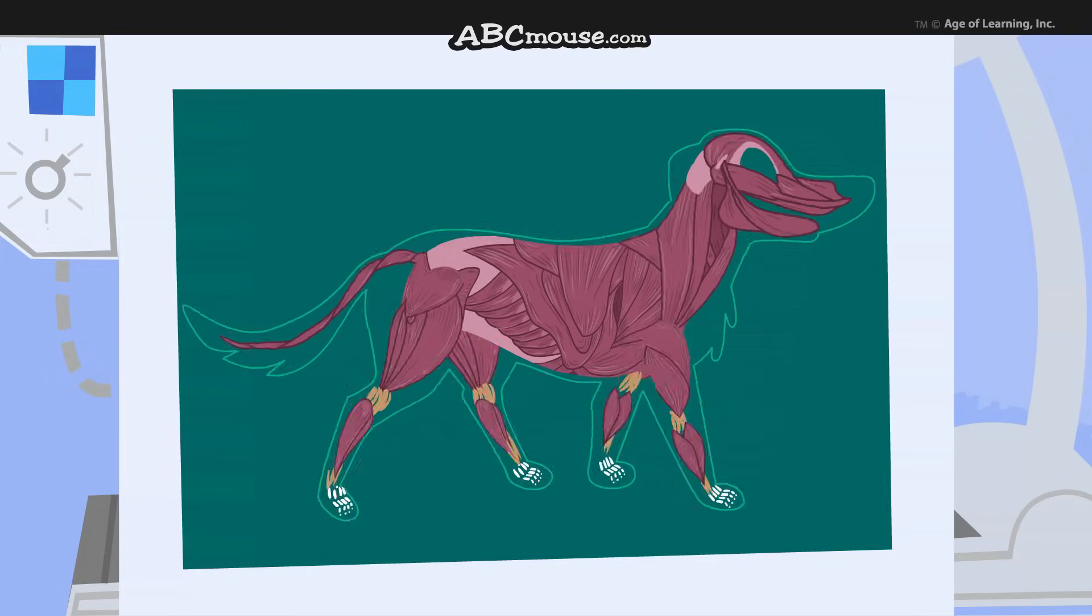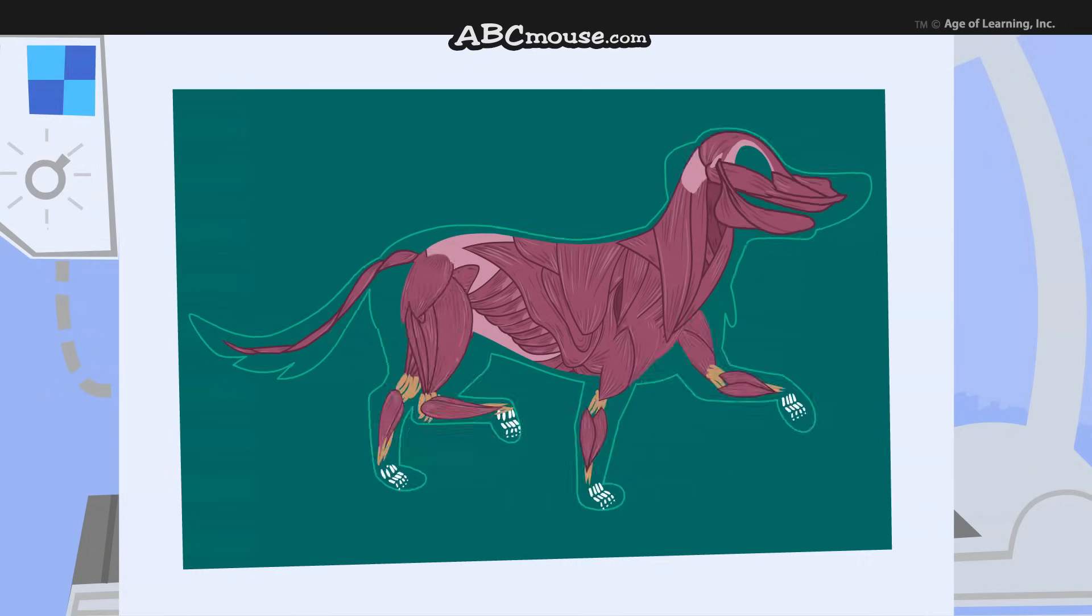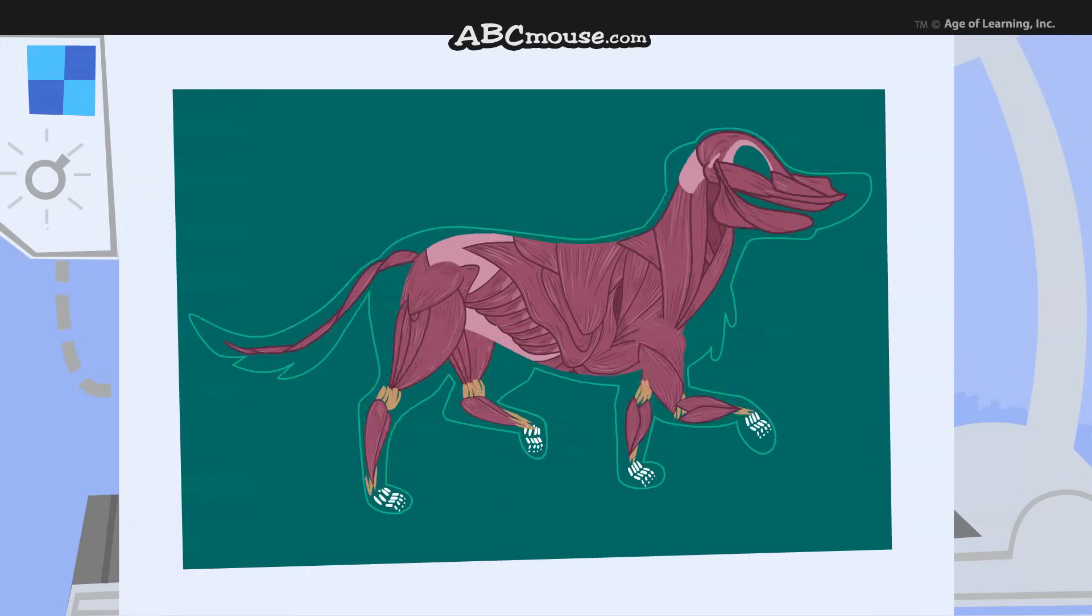When Jester wants to walk, his brain tells his muscles to move. His muscles are connected to his skeleton. So when his muscles move, his skeleton moves too. Talk about teamwork. In fact, without muscles, his skeleton couldn't move at all.